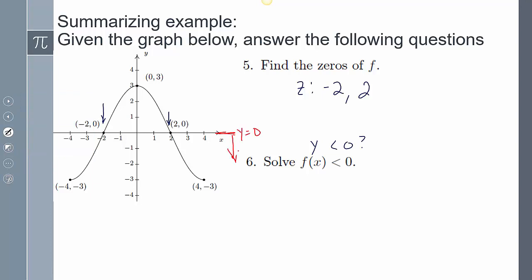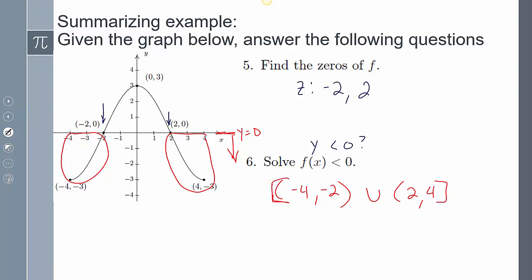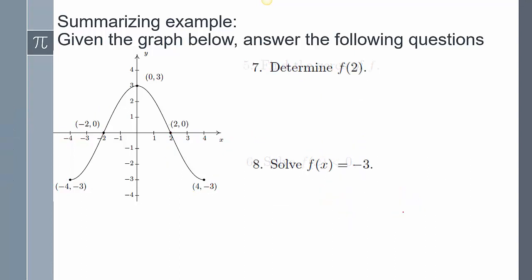The values where f(x) is less than 0 are below the x-axis. That gives us the interval from negative 4 to negative 2, and then the union with the interval from 2 to 4. We can use brackets since those endpoints are included in the domain. However, we don't include the zeros themselves since f(x) cannot equal 0 there. Determine f(2): going to x equals 2, the y-value is 0.